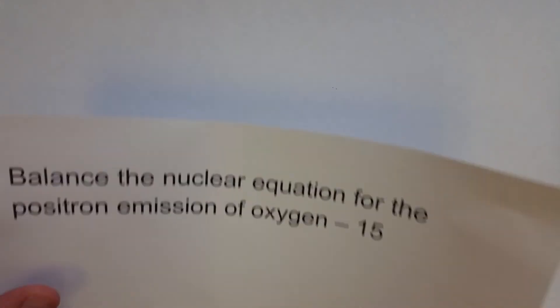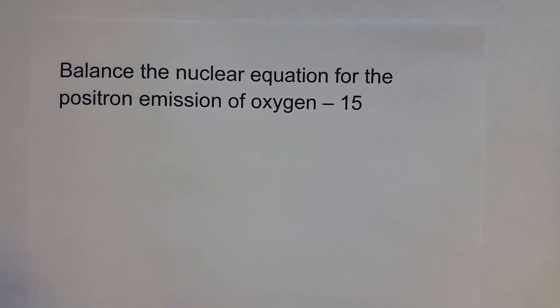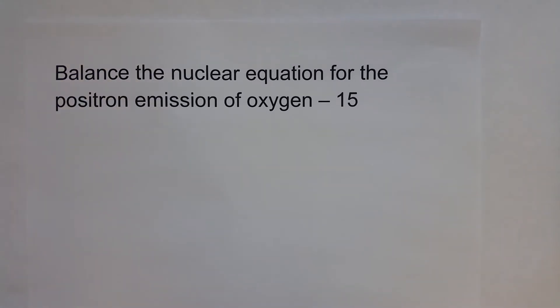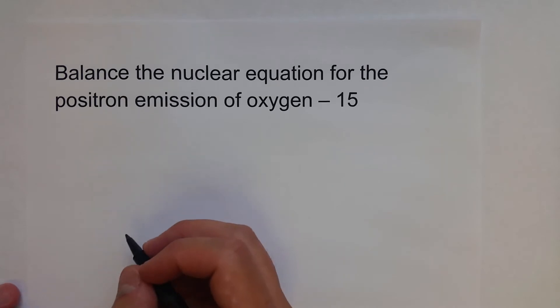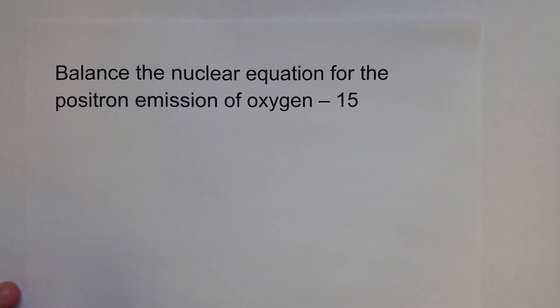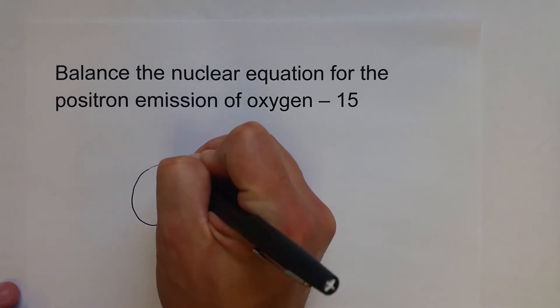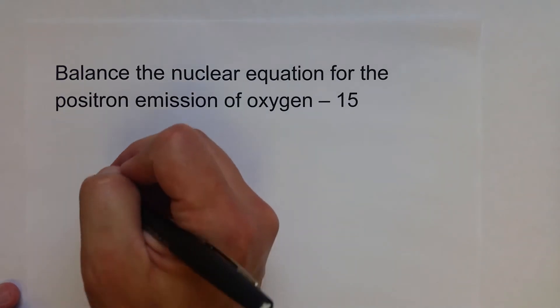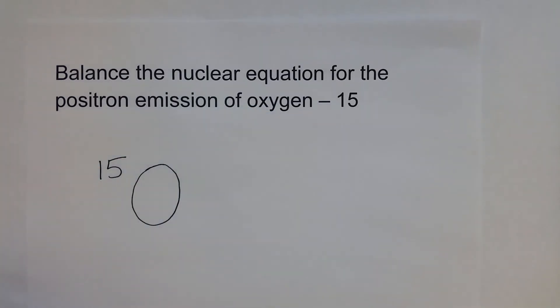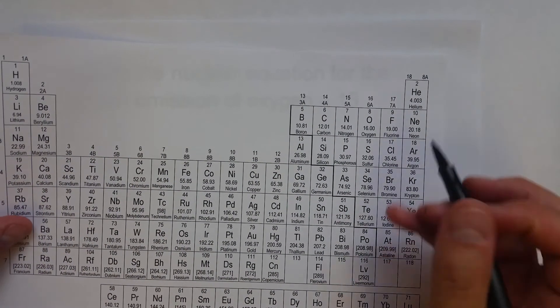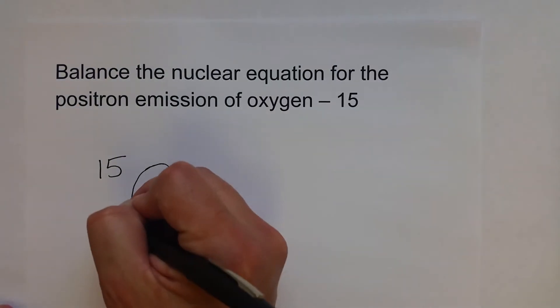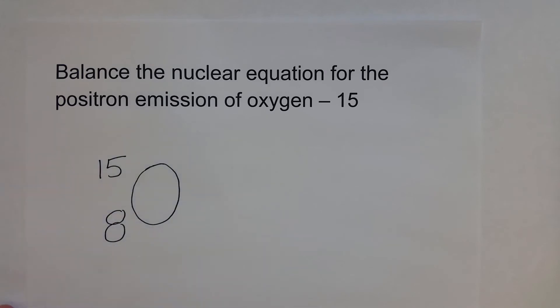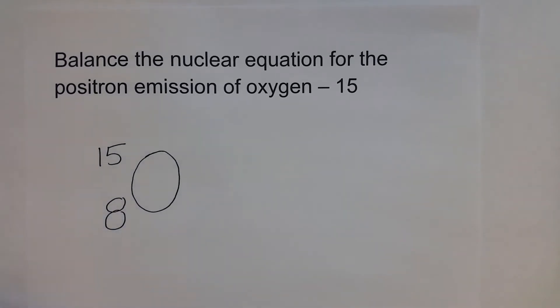All right, let's try another couple of examples. Here, we're going to balance the nuclear equation for the positron emission of oxygen-15. Oxygen-15 can be used in a healthcare field for PET scans, which is positron emission tomography scans. So, what isotope is produced when oxygen emits a positron? Of course, we want to write the atomic symbol for our parent isotope. Oxygen-15, mass number 15. How many protons does oxygen have? Go to the periodic table. We can see that it has eight protons.